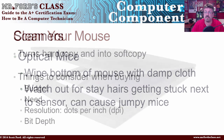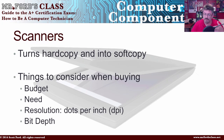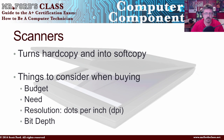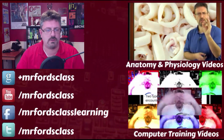The scanner takes hard copy and turns it into soft copy. Hard copy is a physical, touchable thing — paper you can read. Soft copy is when you scan it and turn it into digital information, zeros and ones. Things to consider when buying a scanner: budget first, then what you need it for. Resolution — dots per inch — determines how clear it will be. Bit depth represents how well it captures color and grayscale.